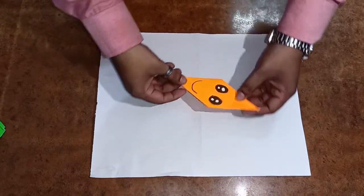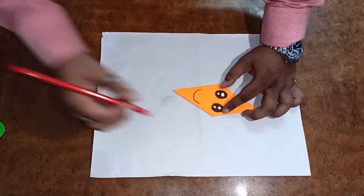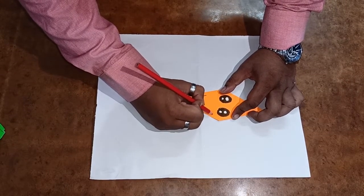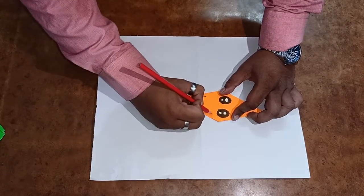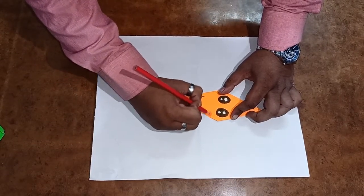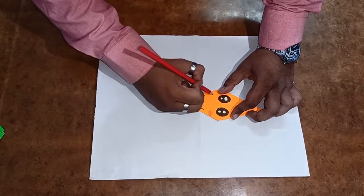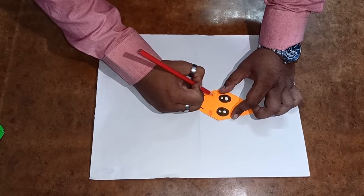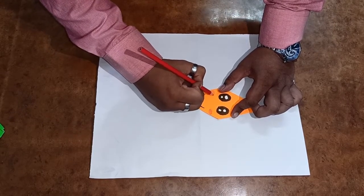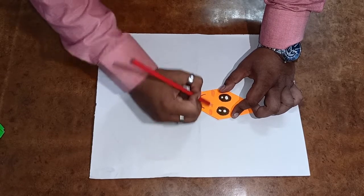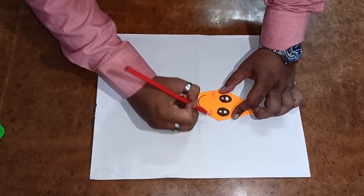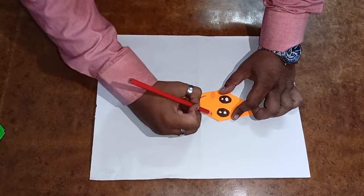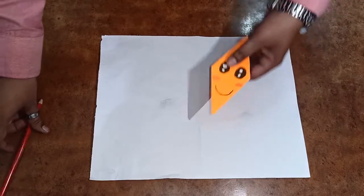Now, what we are going to do? We are going to make cheek of the carrot like this. And for that, we are using red pencil color. See how I am doing it. Can you see, students? How beautiful it is looking. Yes or no?